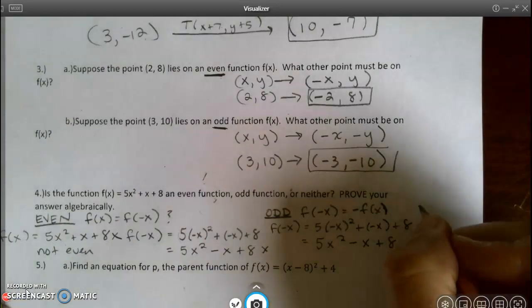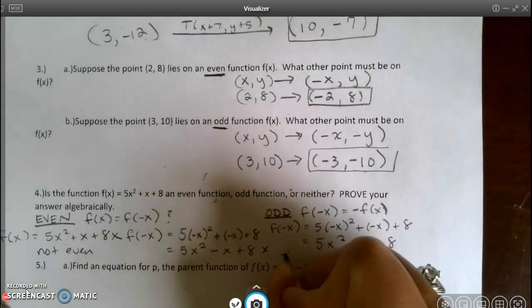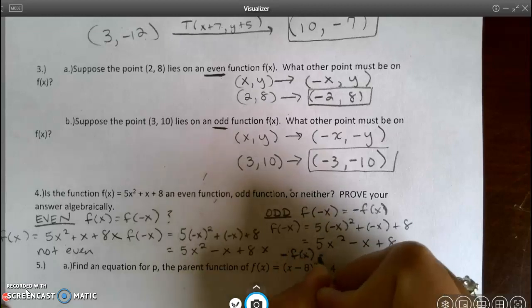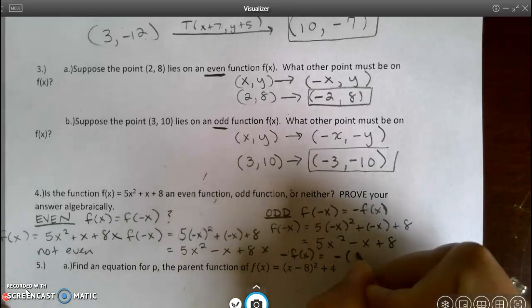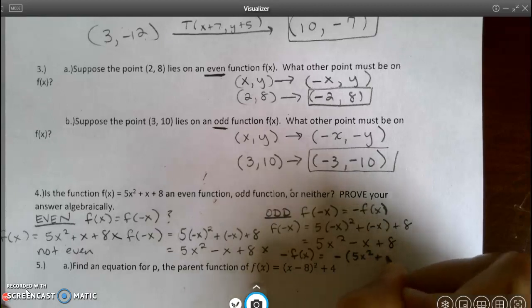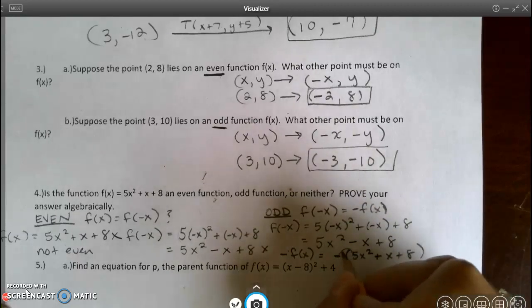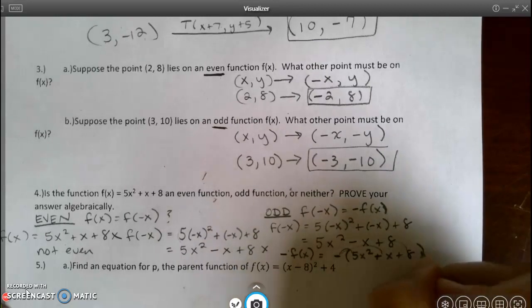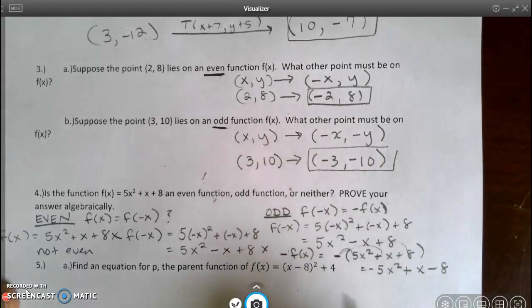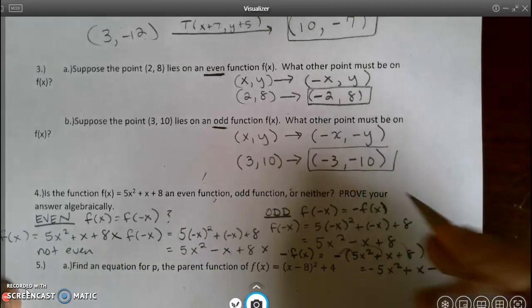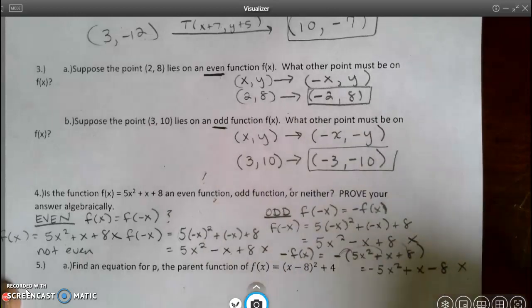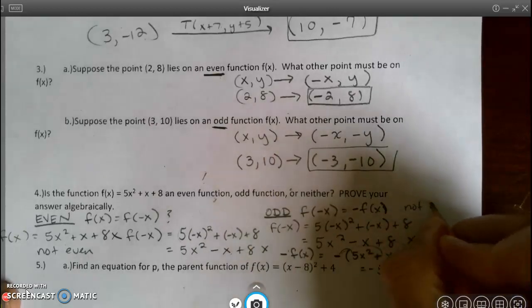And now I need to do my negative f of x. So negative in front of the entire function. And when I distribute that negative to all, I get negative 5x squared plus x minus 8. Well, these are definitely, I'm sorry, here and here, these are not the same. So it's not odd.